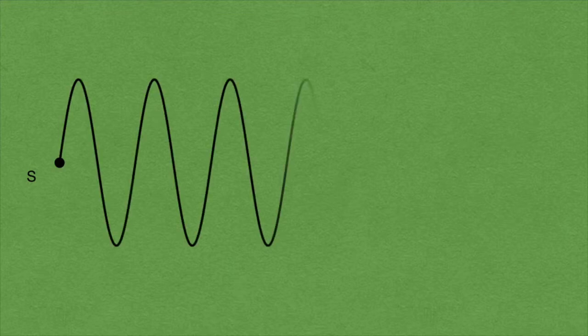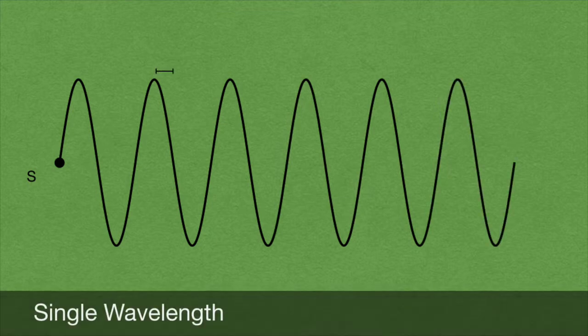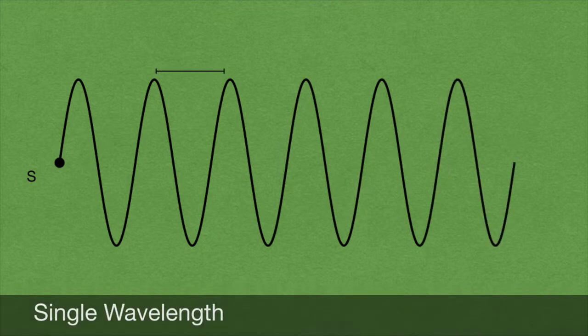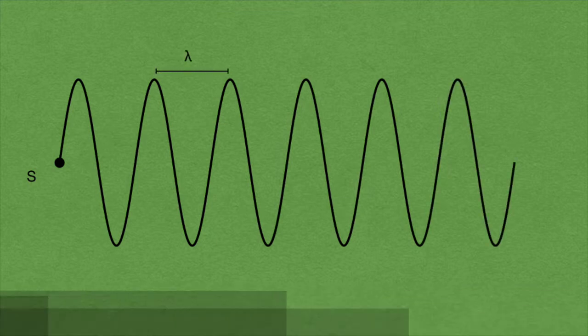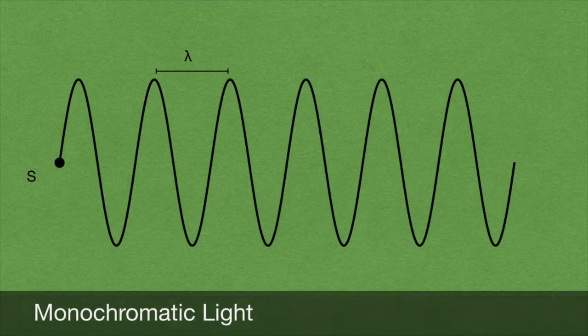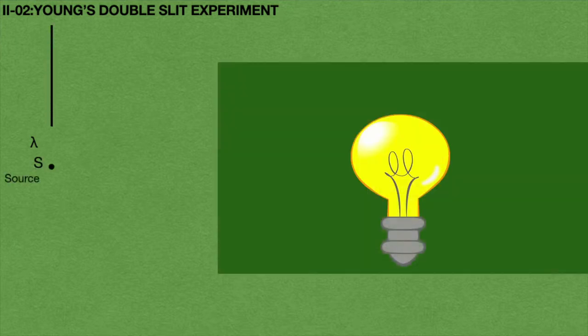Now we will consider a monochromatic light source. Monochromatic light means the light which emits a single wavelength at all times. This light is called monochromatic light. S is our light source.